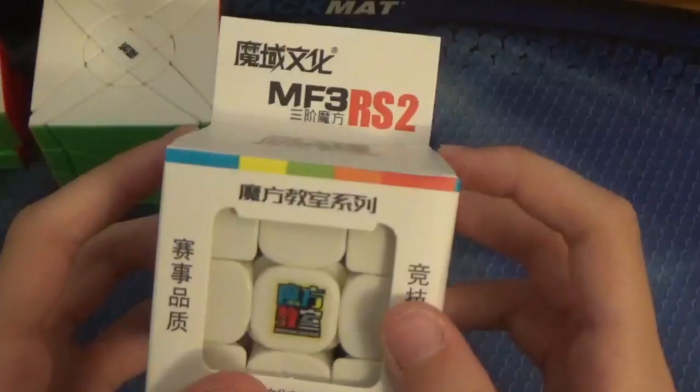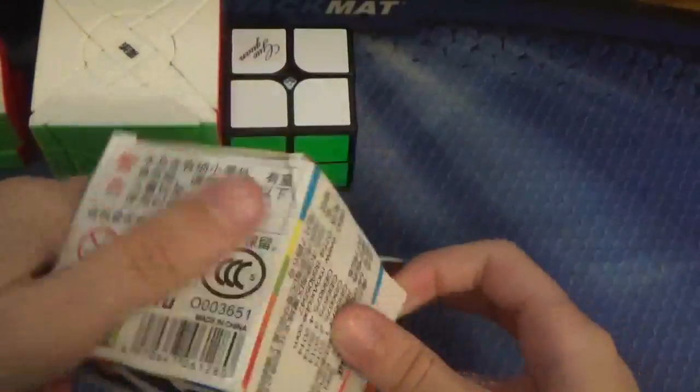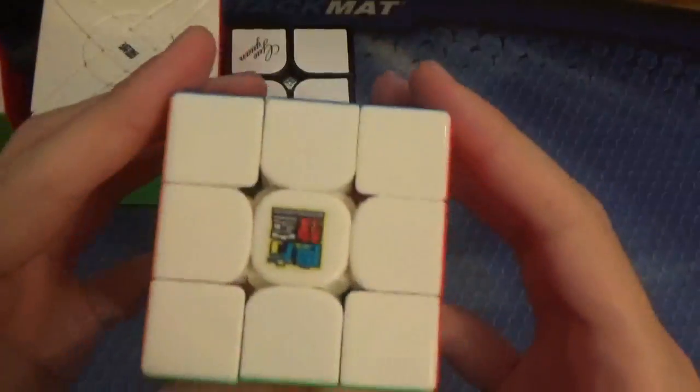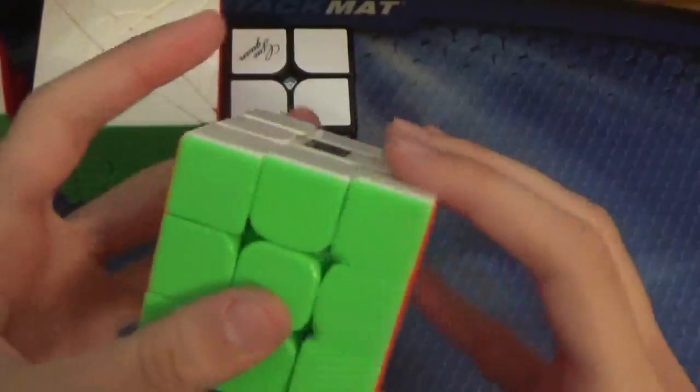And last, but certainly not least, we have the MF3RS 2. So, oh, it doesn't come in plastic or anything. Alright, same logo as the other MF3RS.